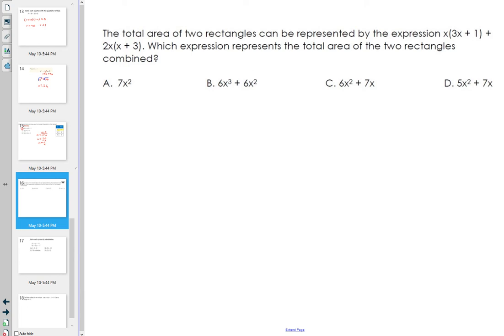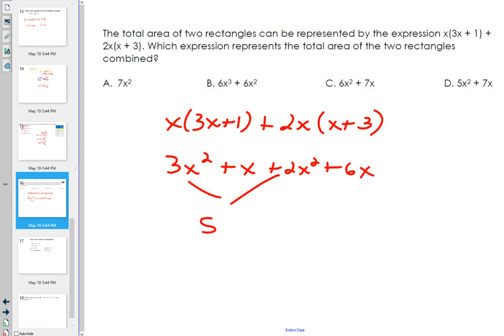The total area of two rectangles can be represented. So they already modeled it for you. All you have to do is simplify here. I'll write again. And then x times 3x plus 1 plus 2x times 1 plus 3. So distribute 3x squared plus x plus 2x squared plus 6x. And then combine like terms. What's 3 plus 2? Use your fingers. And so that's 5x squared. And then x to the 6x is plus 7x.